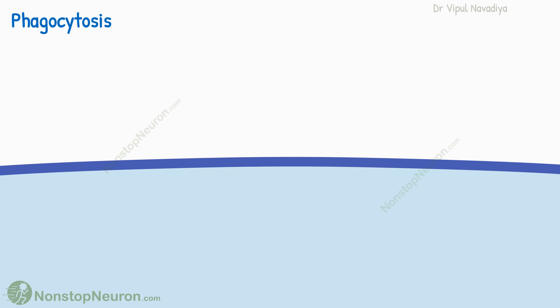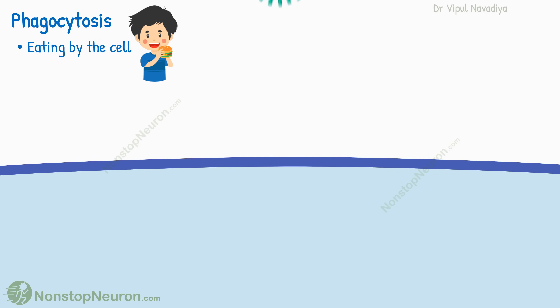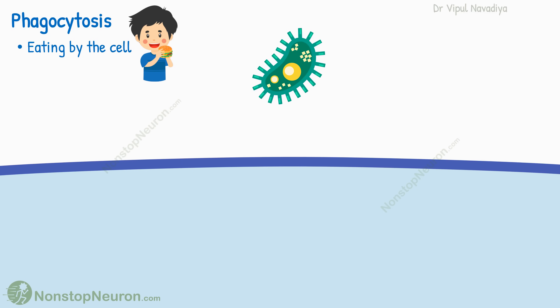Now let's talk about phagocytosis. It means eating by the cell. It occurs for the intake of large particles, such as bacteria or whole cells. And only some cells are capable of doing phagocytosis, like tissue macrophages and some white blood cells.